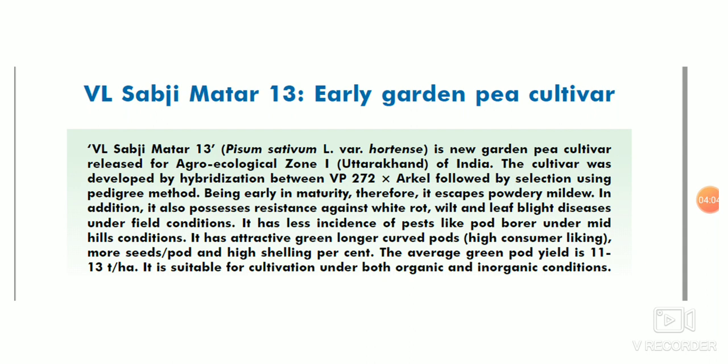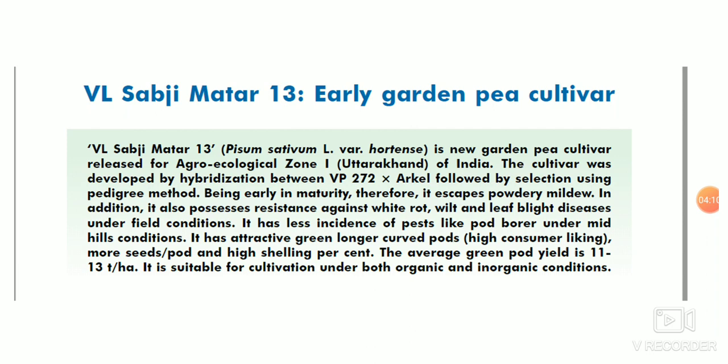Coming to the next, newly released variety PVL sub g motor 13. This is a hybrid variety, a cross of VP 272 with Arkel. It possesses resistance against white rot, powdery mildew, wilt, and leaf blight under different field conditions. Thanks for today, friends.